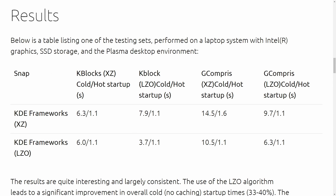With an LZO snap on an LZO framework, K-Blocks starts in 3.7 seconds, compared to 7.9 seconds for an LZO snap on an XZ framework. So using LZO for both the snap and the framework is over two times quicker — quite an impressive result.